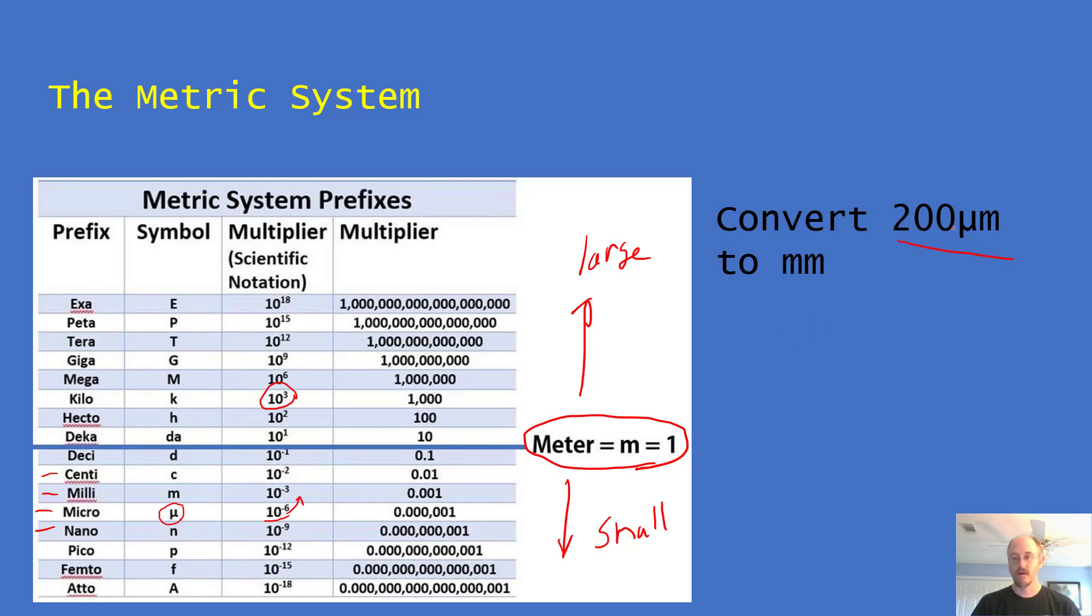So a micron is smaller than a millimeter. So this is going to be a number smaller than 200. One, two, three. This is going to be 0.2 millimeters. So I would practice converting a few of these numbers just to make sure you understand how the metric system works. There's plenty of examples online for you to do that.